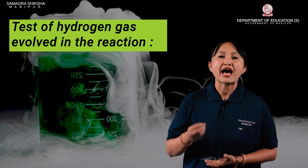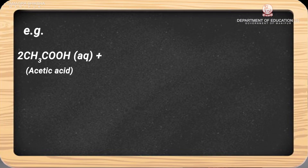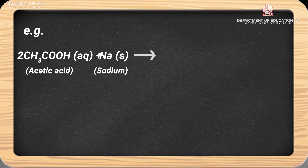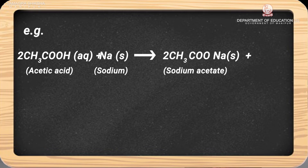For example, acetic acid reacts with sodium metal to produce sodium acetate salt along with hydrogen gas.